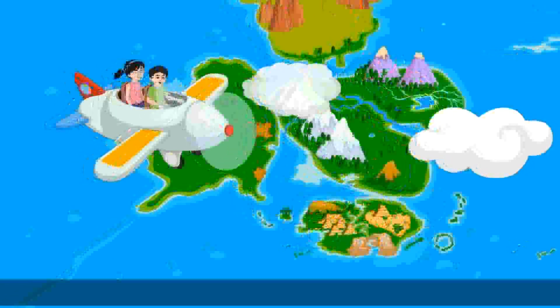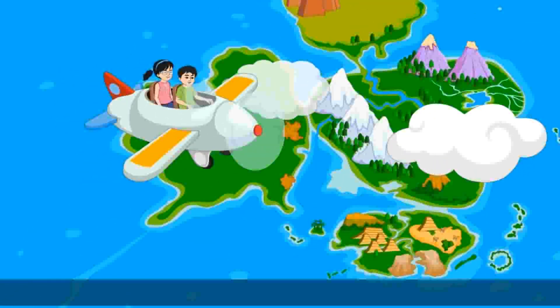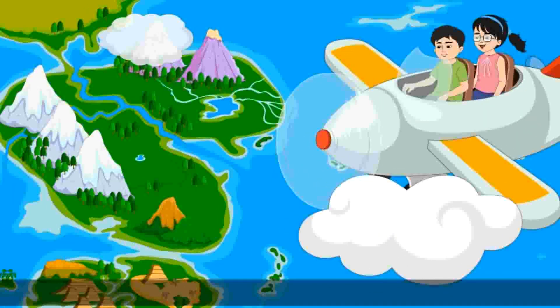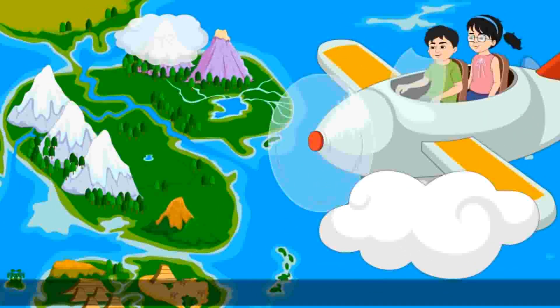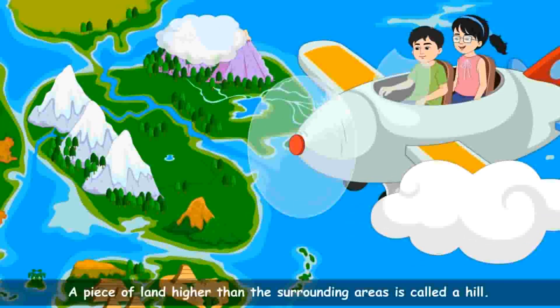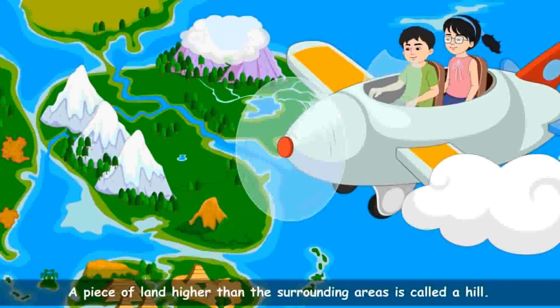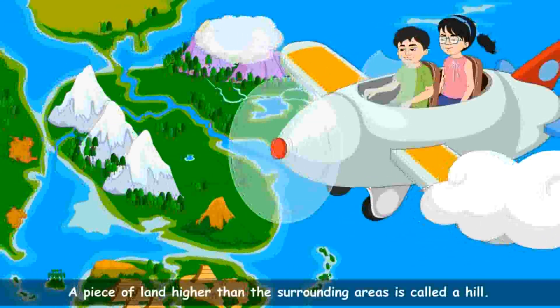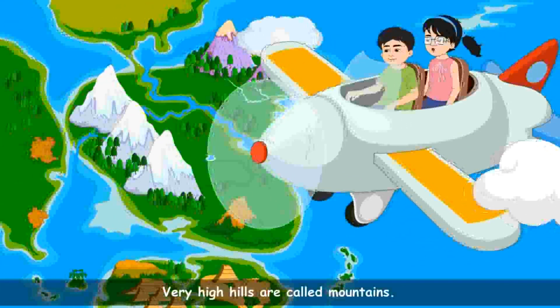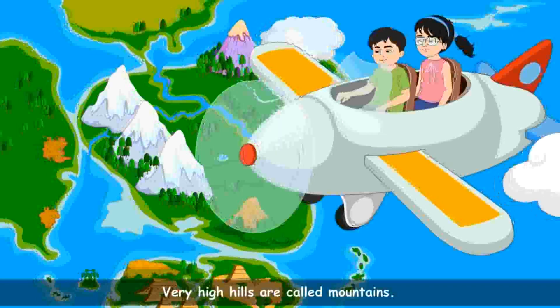Wow, what is this high area? Rohit, this is a mountain. The piece of land higher than the surrounding areas is called a hill. Very high hills are called mountains.